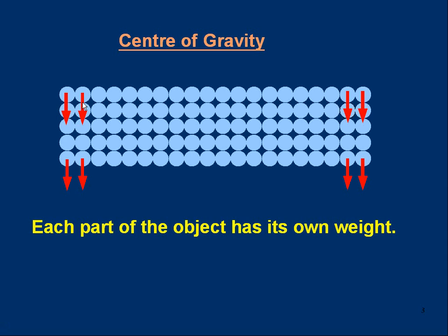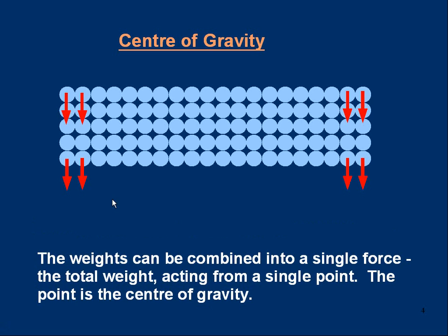If you have to do a calculation involving the object's weight, you don't want to have to think about the weight of each atom separately. You want an overall weight in the right position that you can use instead of the separate weights. So what we do is this: the separate small weights can be combined into a single force, which is the total weight of the object. We can think of this total weight as acting from the average position of all the other little weights — from a single point. And this point is called the center of gravity of the object.